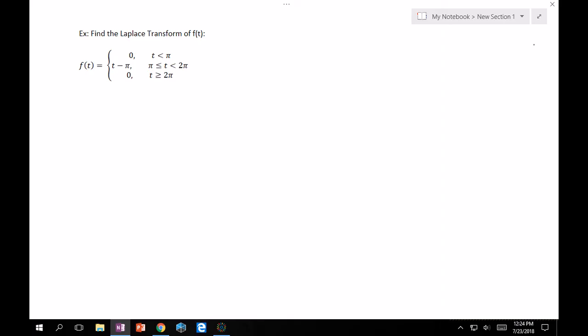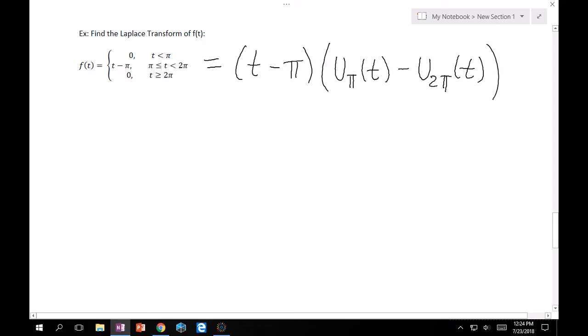And so, by looking at this, you can rewrite this in one line. It's very similar to what we just did. So, this is just quantity t minus pi. And you turn it on pi. So, uπ of t minus u2π of t. But we want to take Laplace. So, let's deal with this each on their own.